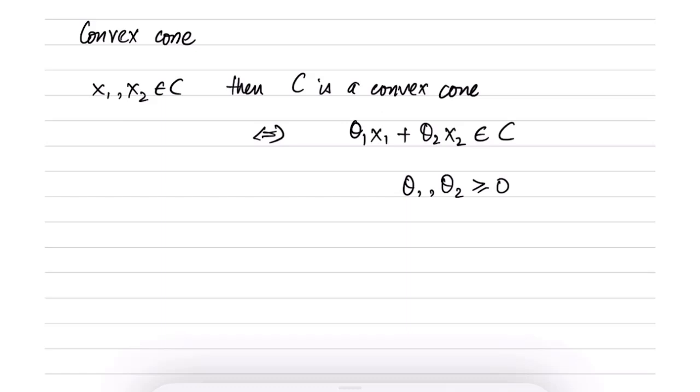So convex cone is defined as: suppose there are two points x1 and x2 in C, then C is a convex cone. This statement is equivalent to saying that θ1x1 plus θ2x2 belongs to C. So if x1, x2 belongs to C, then θ1x1 plus θ2x2 belongs to C, where θ1 and θ2 are both non-negative numbers.